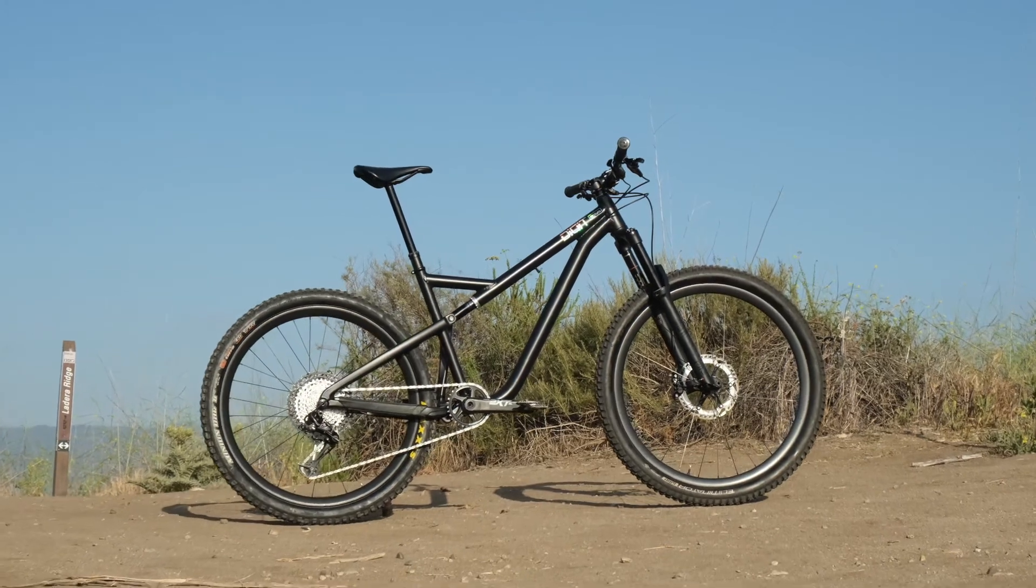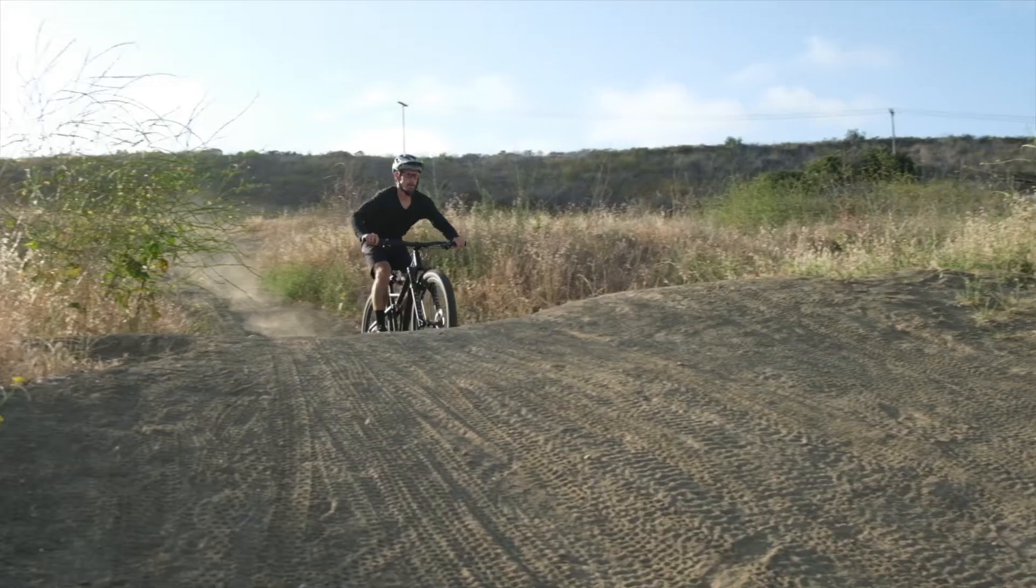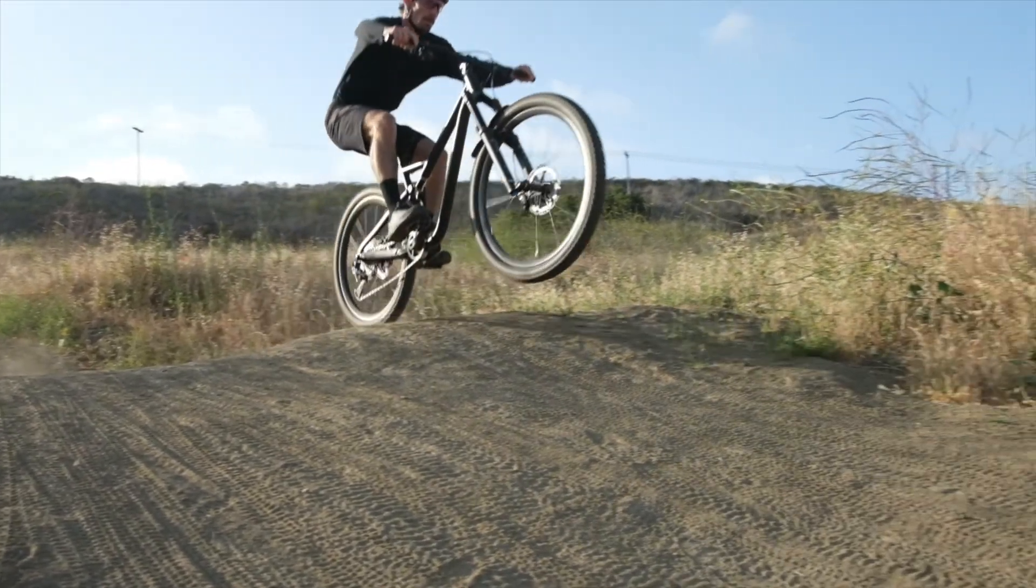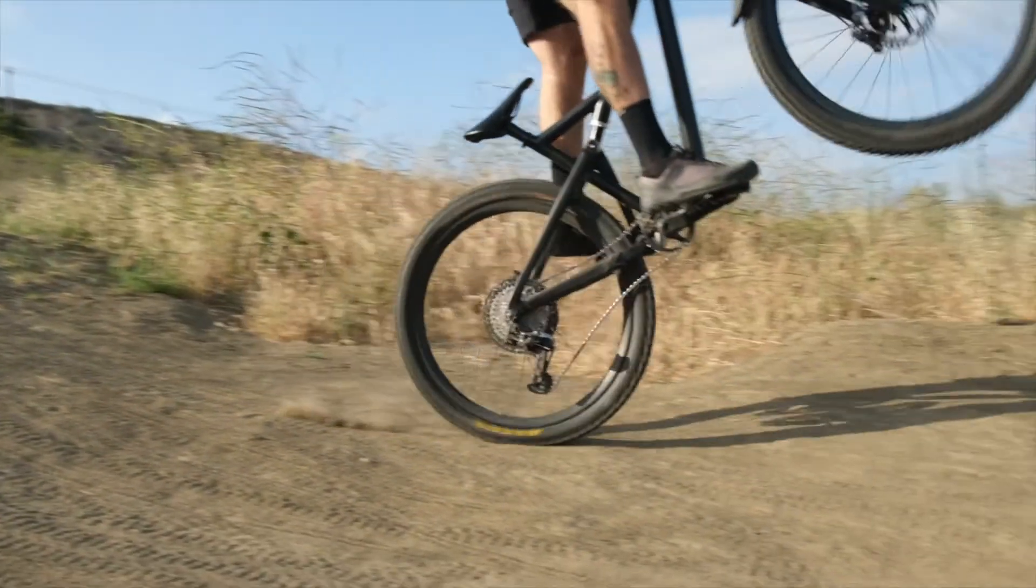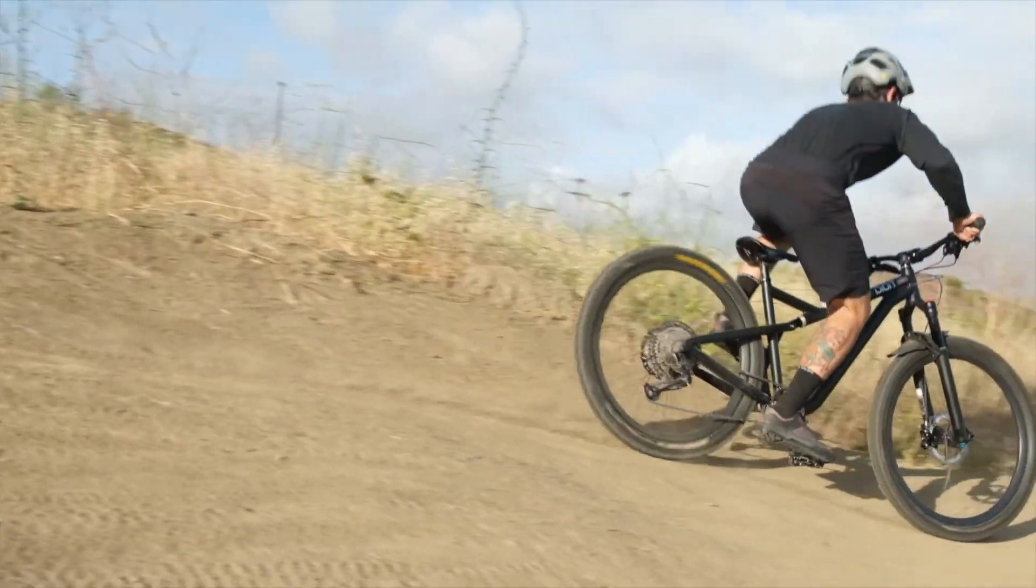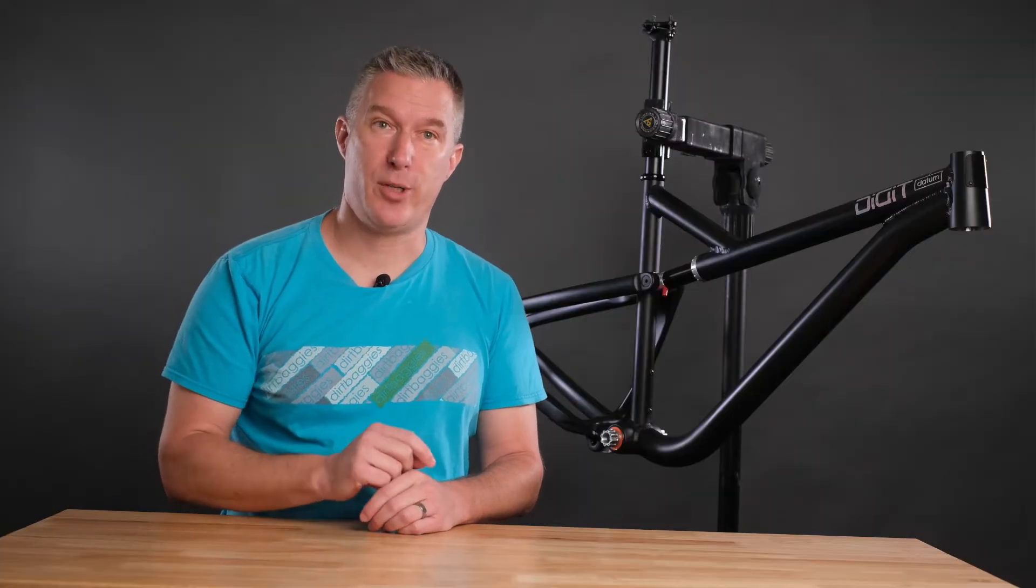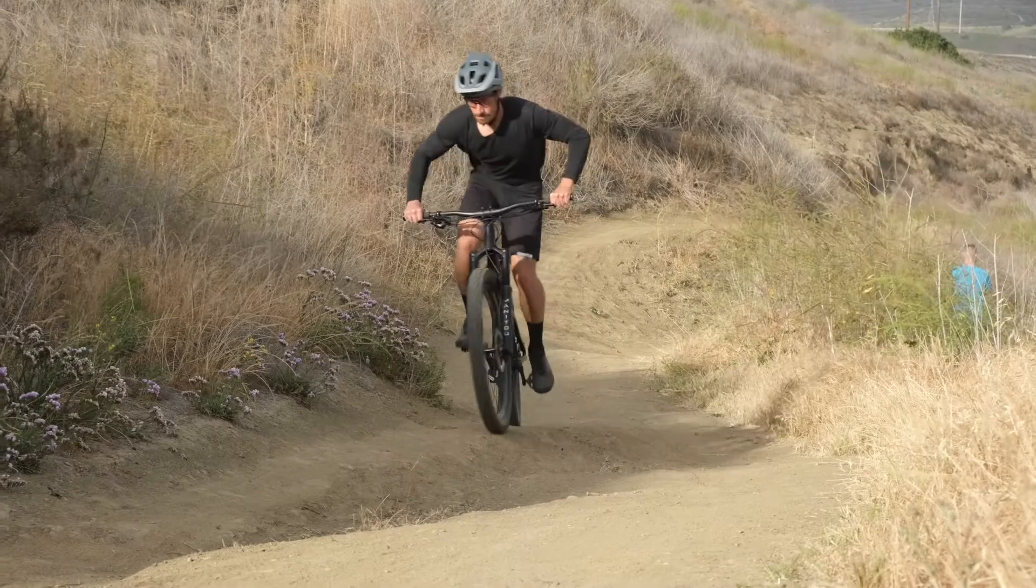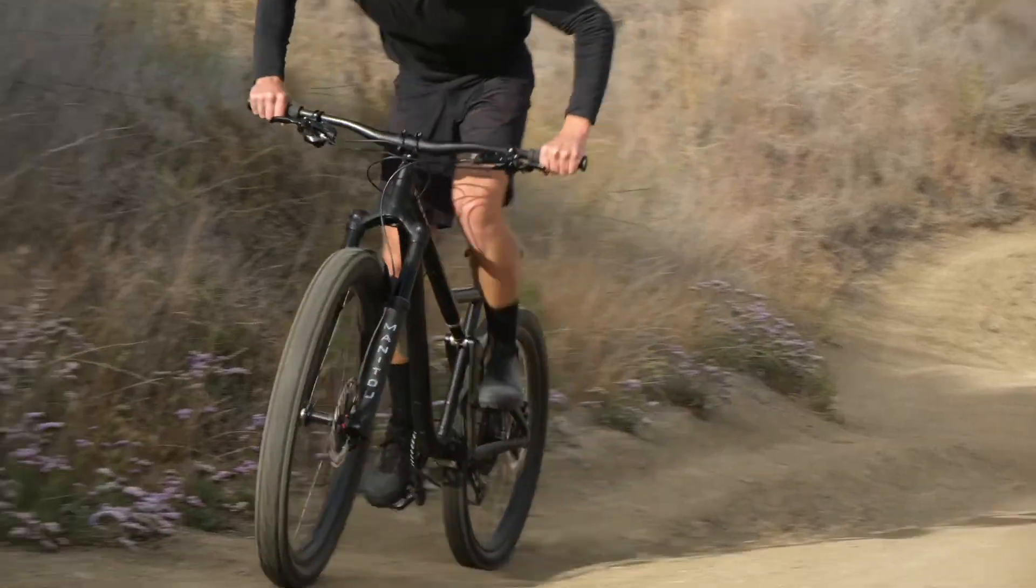I should mention at this point that this first model, the Datum, has a mullet configuration with a 29 inch wheel up front for stability and control and a 27.5 inch wheel in the rear which allows you to drop the seat and your butt about 40mm lower without getting buzzed by the tire. Also, the seat tube is aligned with the bottom bracket. This means that riders on large frame sizes don't end up positioned too far over the rear axle. This is a problem with many current bikes which cite effective seat tube angles in their geometry charts.